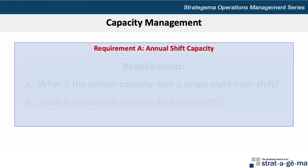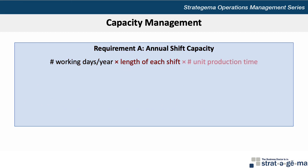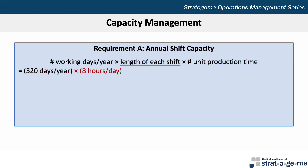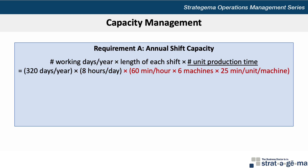To determine the annual shift capacity, we can take the number of working days per year times the length of each shift times the unit production time. So we take 320 days per year times 8 hours per day times 60 minutes per hour times 6 machines, divided by 25 minutes per unit per machine. This results in an annual shift capacity of 36,864 units per year.